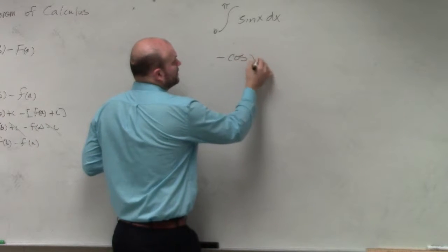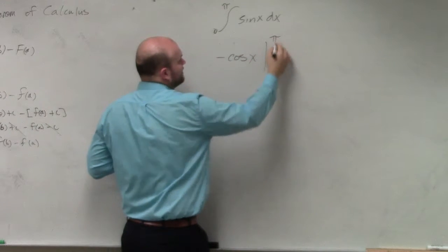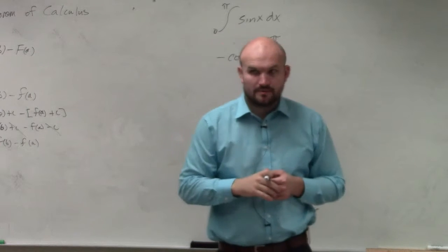So you're going to have negative cosine of x, and we're going to evaluate from pi to 0.